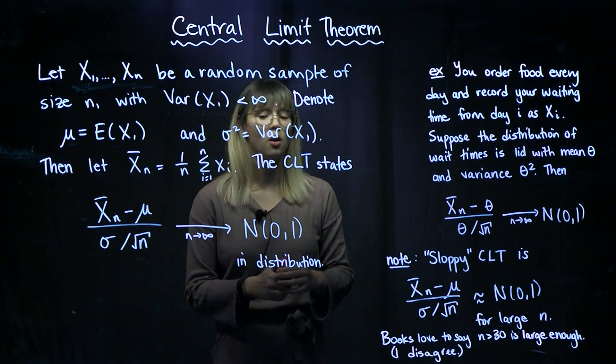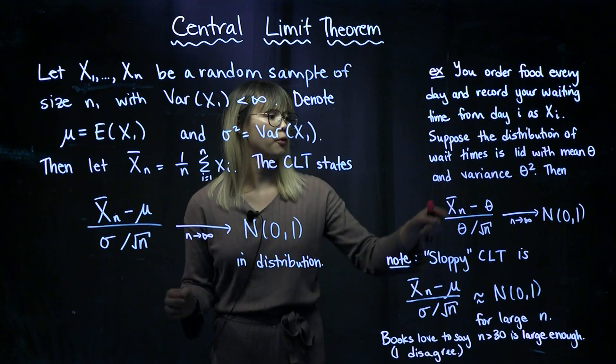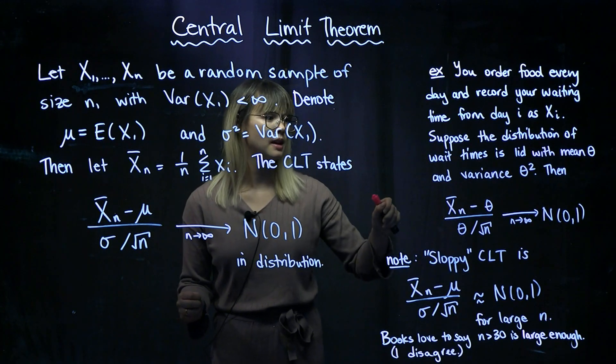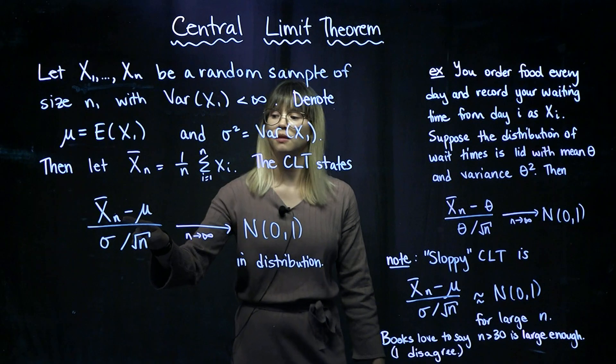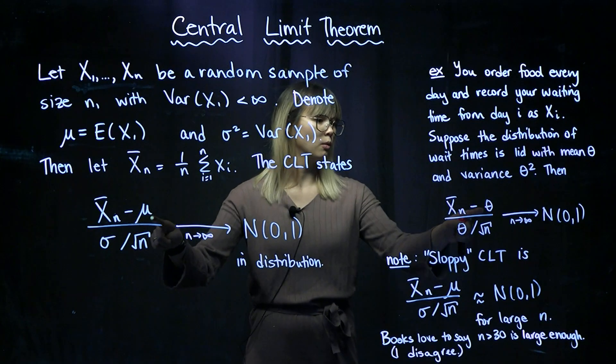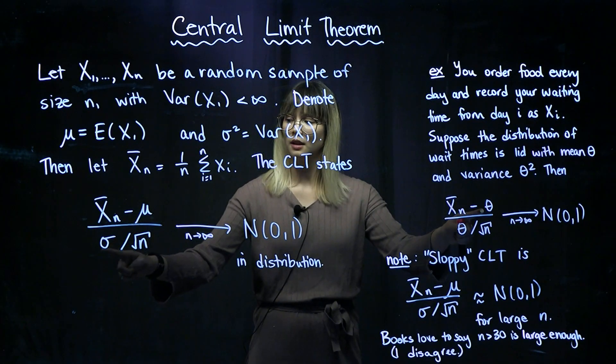Now let's talk about what the central limit theorem would say for your average wait time. What it says is x bar n minus mu, which in this case is theta, divided by,